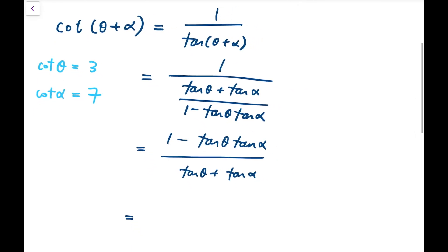So if I can rewrite that in terms of cotangent, then I can put the numbers directly into that expression. So I'm going to divide both the numerator and denominator by tangent theta times tangent alpha.